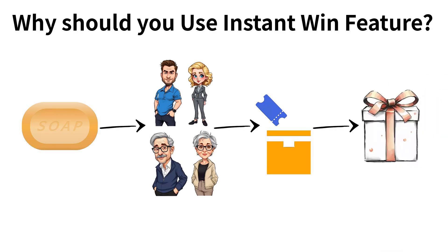Let's assume you have launched a new soap on your WooCommerce shop and you want to offer your soap to 100 users as a gift so that those users can try your newly launched product. With the help of the instant win feature, you can offer your new product as a gift to the first 100 users who participate in a contest or giveaway which you run on your WooCommerce shop.